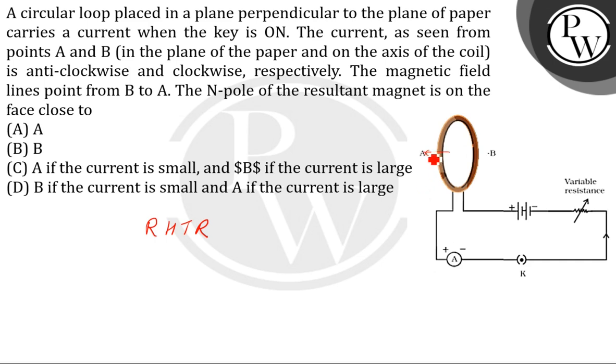The magnetic field emerges from the north pole of the magnet and goes into the south pole. Hence, the correct answer is option A: the north pole of the resultant magnet is on the face close to A.